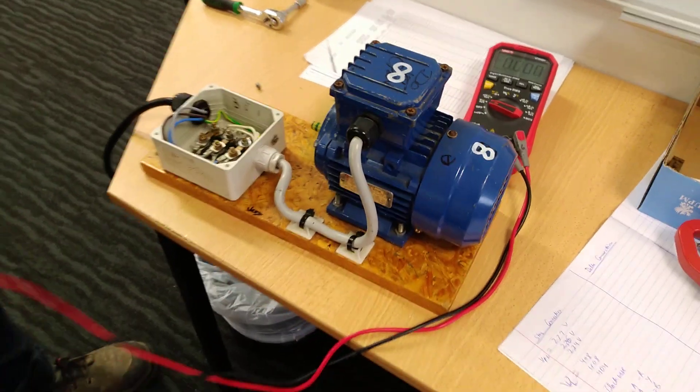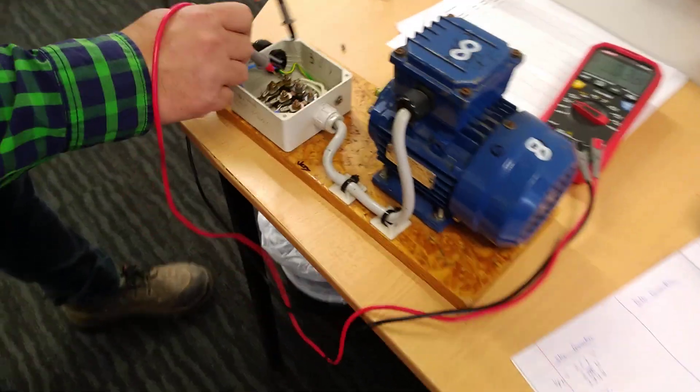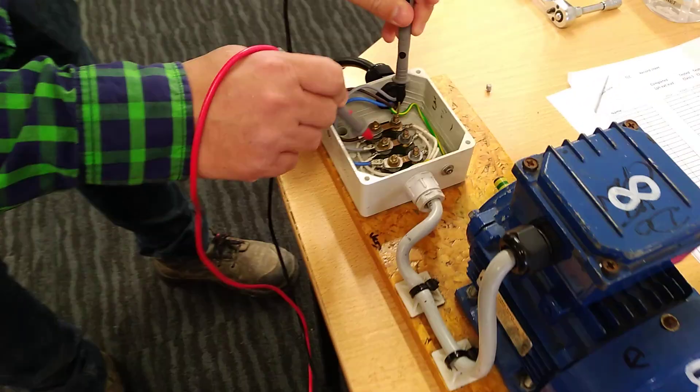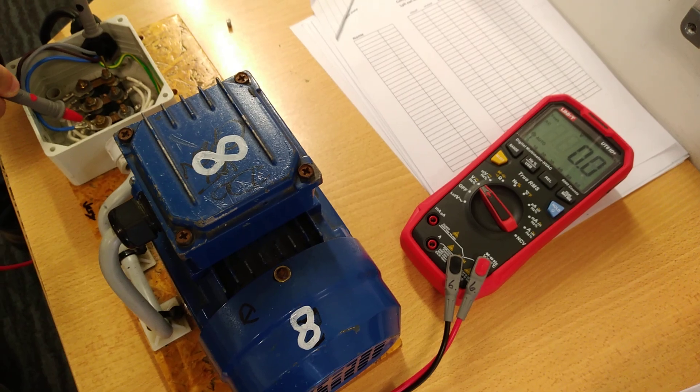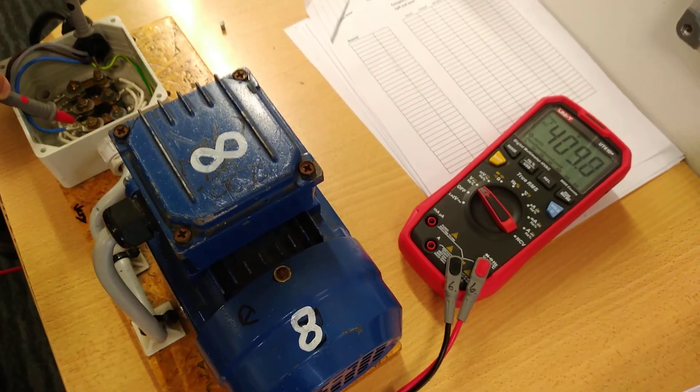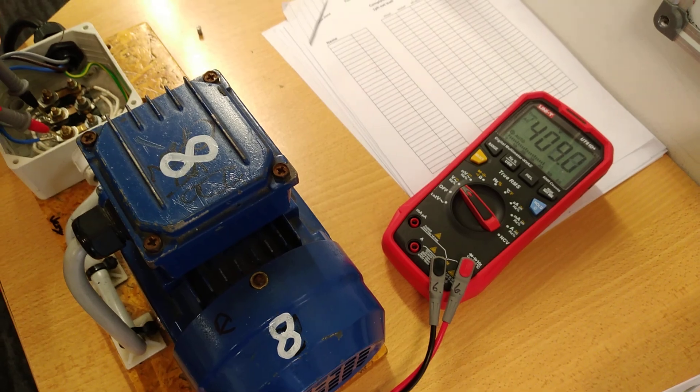This time the motor's in delta. We want to take the voltage. Voltage we can measure from here to here. 403. And here 406. And here 406. Excellent. So note those down please.